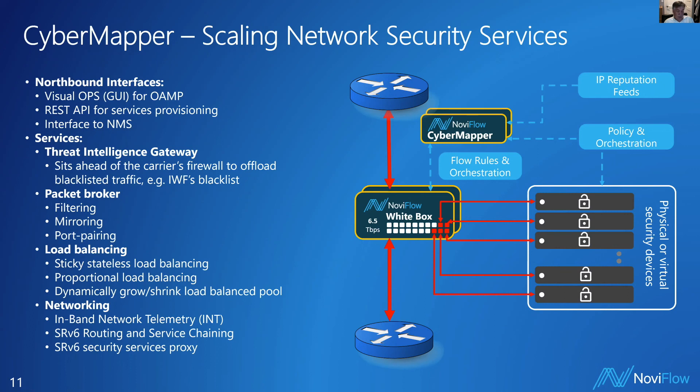CyberMapper is a NoviFlow solution that provides a number of network services that operators need. It consists of the CyberMapper application and controller that leverages the capabilities of the NoviWare NOS running on Barefoot Tofino white box switches. The Threat Intelligence Gateway service is a way for operators to block certain traffic from getting onto their network — CyberMapper executes any deny list directly in the Tofino Silicon, much more efficiently than on an x86. An example of a deny list is that published by the Internet Watch Foundation.